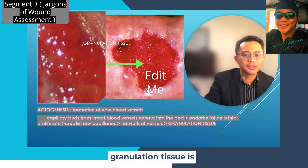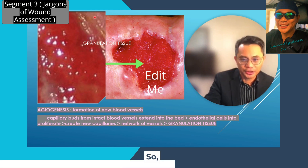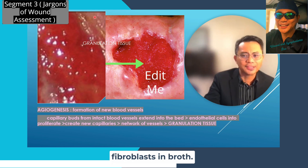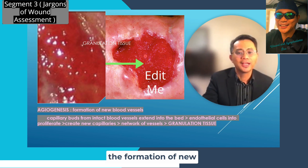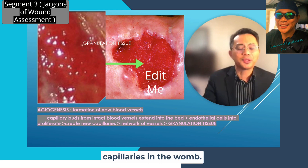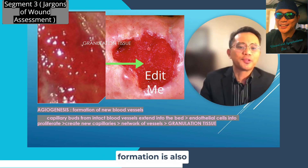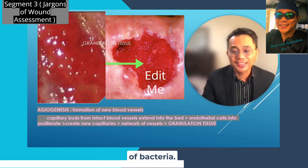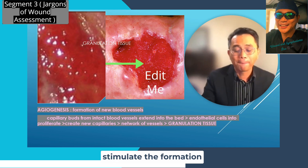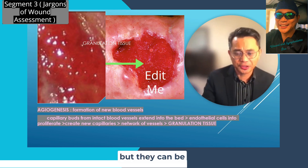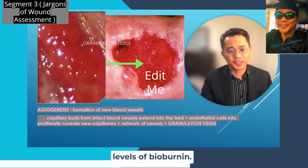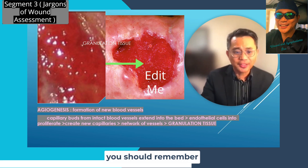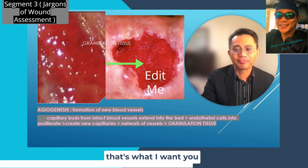The production of granulation tissue is dependent on macrophage accumulation. Macrophages stimulate fibroblasts, leading to deposition of loose connective tissue and the formation of new capillaries in the wound. Granulation tissue formation is also stimulated by low levels of bacteria, but it can be inhibited by high levels of bacteria or high levels of biofilm.